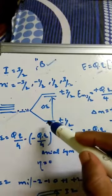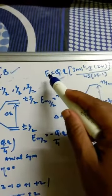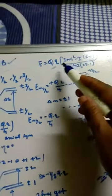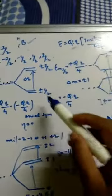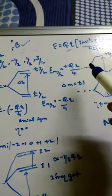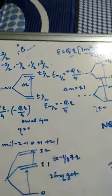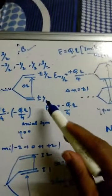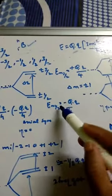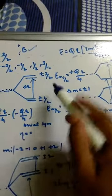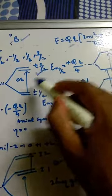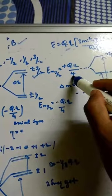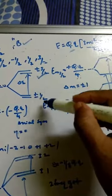We judge this splitting by calculating the E values. Substituting mI = +1/2 into the energy equation gives −eQq/4, so those levels come down. Substituting mI = 3/2 gives +eQq/4, so those levels go up. That is why the levels split in this way.